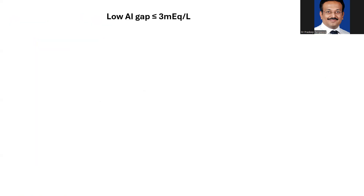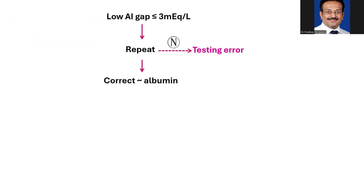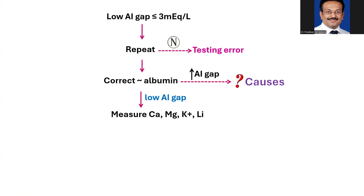Here is the simple algorithm for low anion gap: if the anion gap is less than or equal to 3 mEq/L, first repeat the test because the commonest cause is technical error — pre-analytical or analytical. If it is normal on repeat, it was a testing error. If it is still low, check albumin and calculate the corrected anion gap using the formula. If after correction the anion gap is high, look for high anion gap causes. If after correction it is still low, check whether calcium, magnesium, or potassium is elevated.